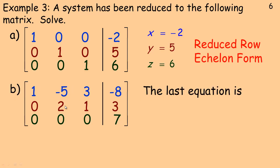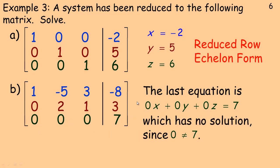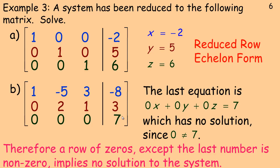The last example has a row that is all zeros except the last number, which is non-zero. The equation would be 0x + 0y + 0z = 7. No matter what x, y, and z are, the left side must equal 0, but 0 doesn't equal 7. So if you have an entire row of zeros except the last number is non-zero, it implies there is no solution to that system of equations. If they were equations of planes, there would be no common intersection point — they would not coincide anywhere.